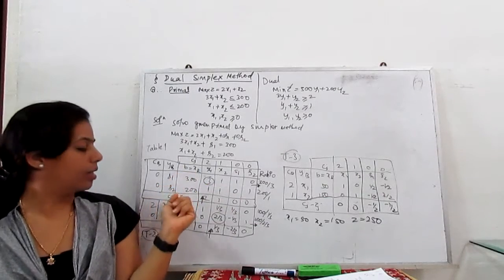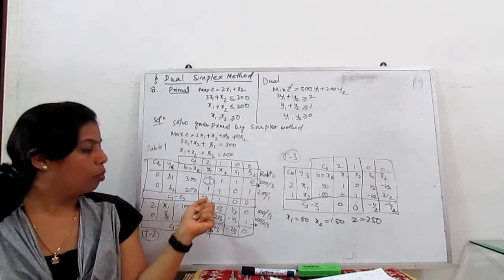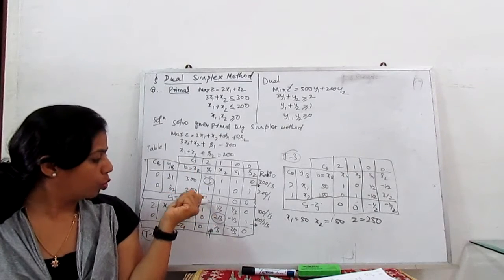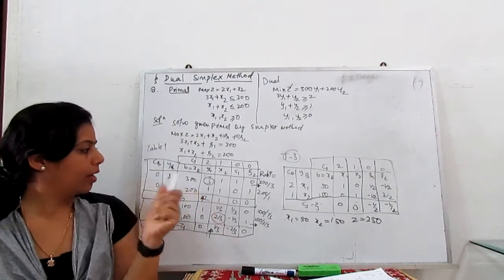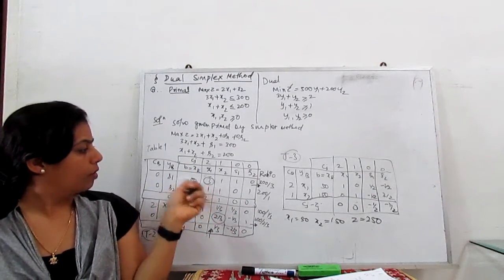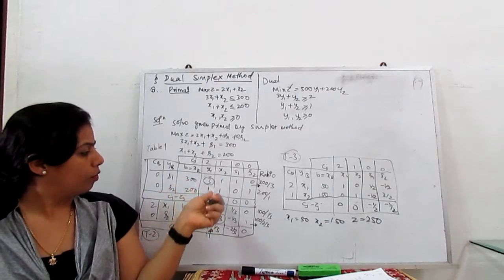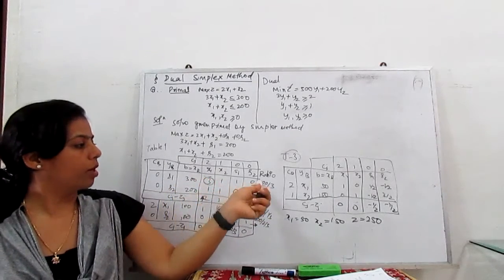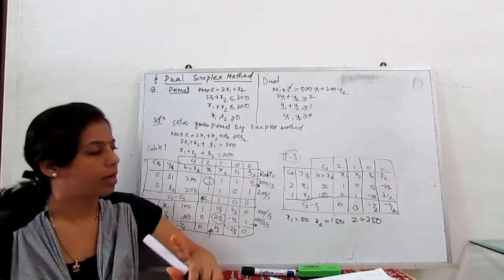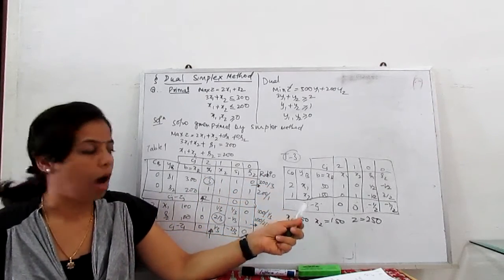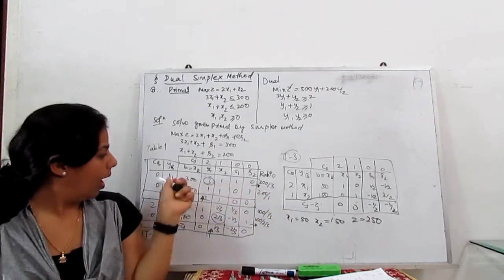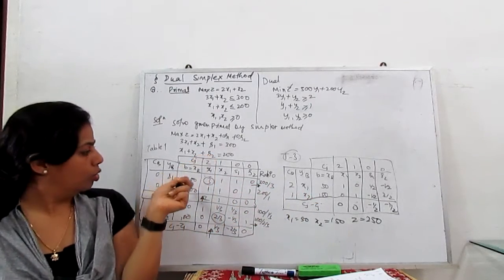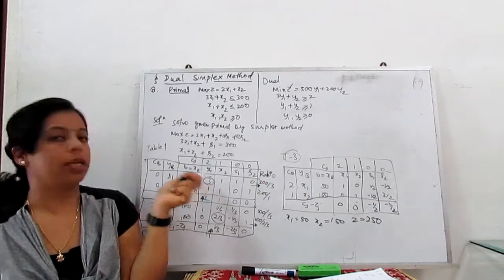From the first table, computing zj − cj, the most positive value is 2, so x1 is the entering variable. For the outgoing vector, we find the minimum ratio: 300/3 = 100 and 200/1 = 200. The minimum ratio is 100, so s1 leaves and x1 enters. The key element is 3.